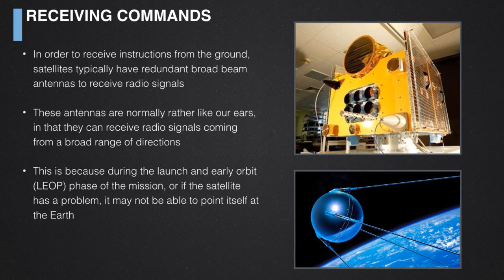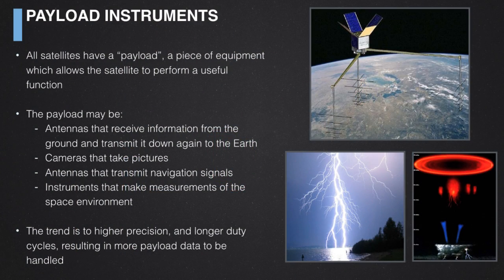You need to be able to tell your spacecraft what to do, so you need to send it commands. Most spacecraft have redundant antennas to receive commands — rather like a human being with two ears, a spacecraft will typically have a pair of antennas. During the early phase of the mission, called the launch and early orbit phase, the spacecraft may not yet have stabilized itself, so you may have receive antennas on multiple faces of the spacecraft so it can never get into an attitude where it's unable to hear commands from the ground.